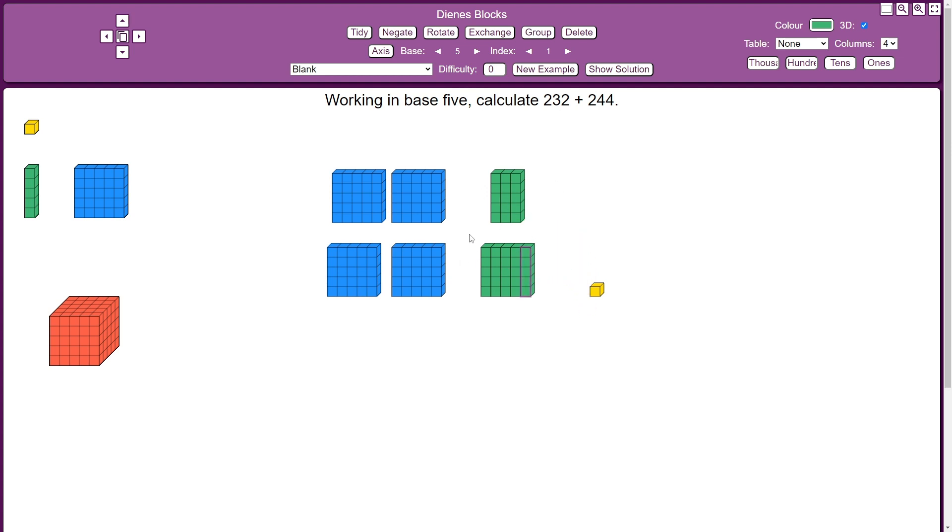Then again here, now you can see I can make a whole group here of 5 5s. So I'm going to group those up and move those to the next column, leaving with just 3 5s in the 5s column.